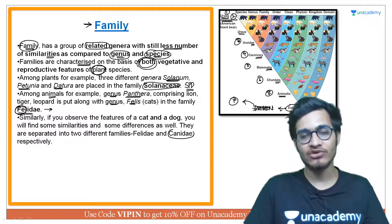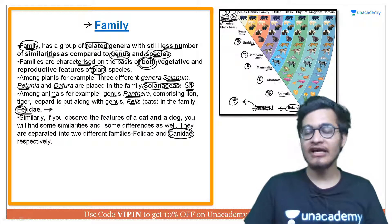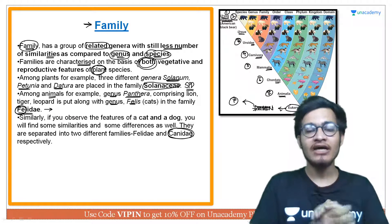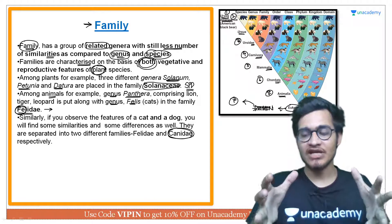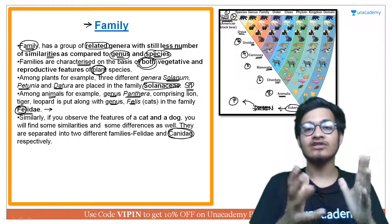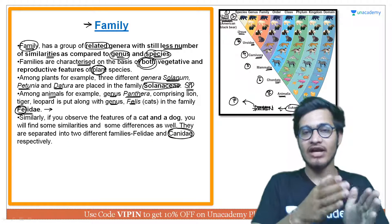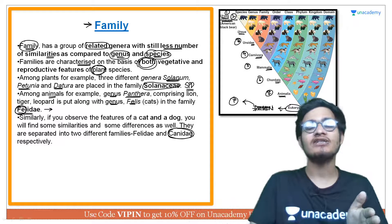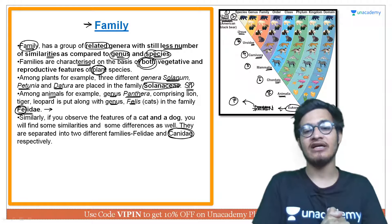The family of dog is called Canidae. From this, we understand that cat is more related to tiger than to dog. Why? Because dog is present in a different family, while cat and tiger are present in the same family. Being in the same group means they share many common characters. Dog being in a different family means it is somewhat more different from both of them, so it was placed in a separate family.